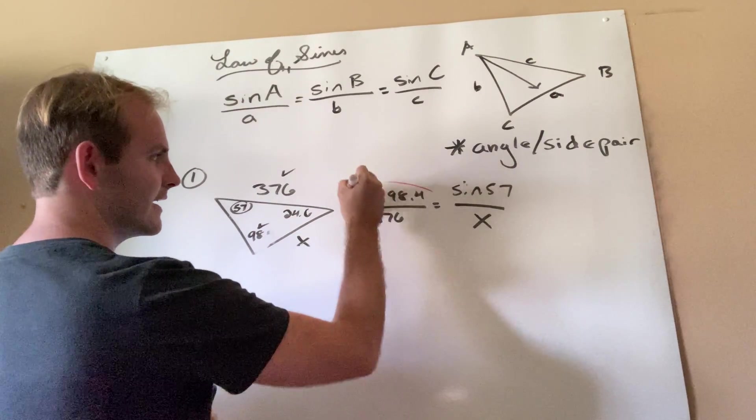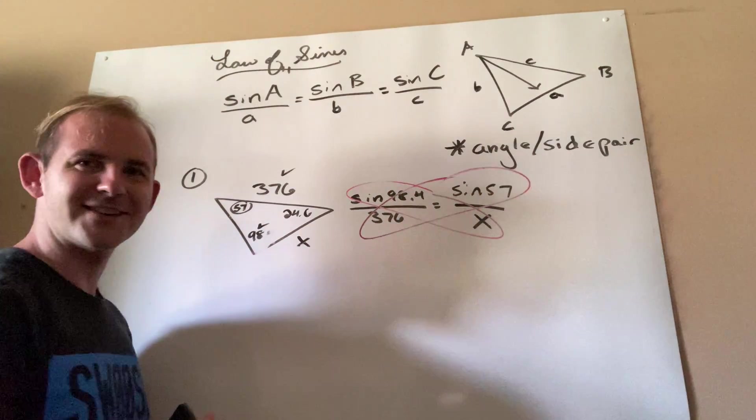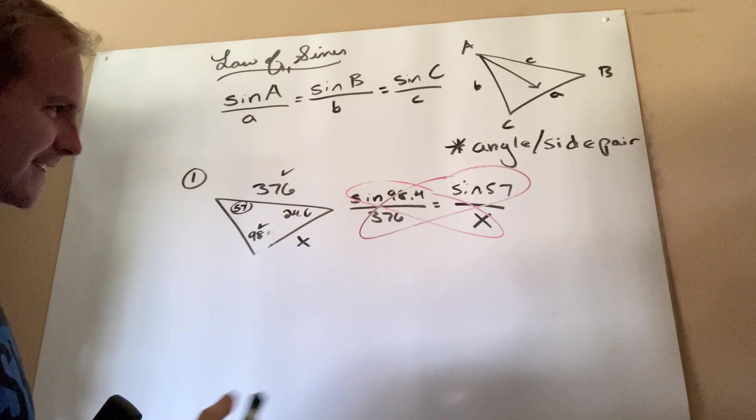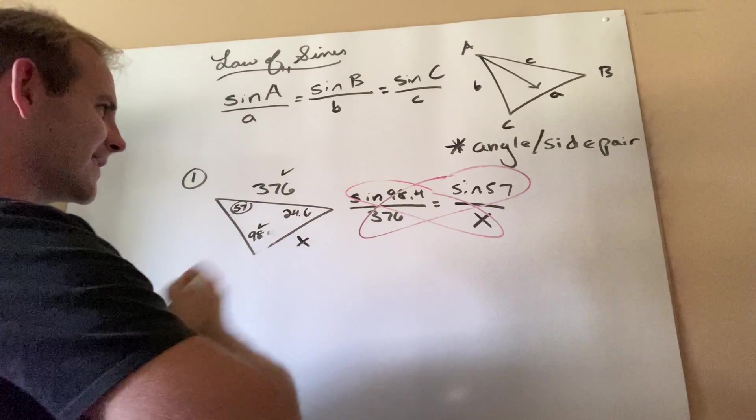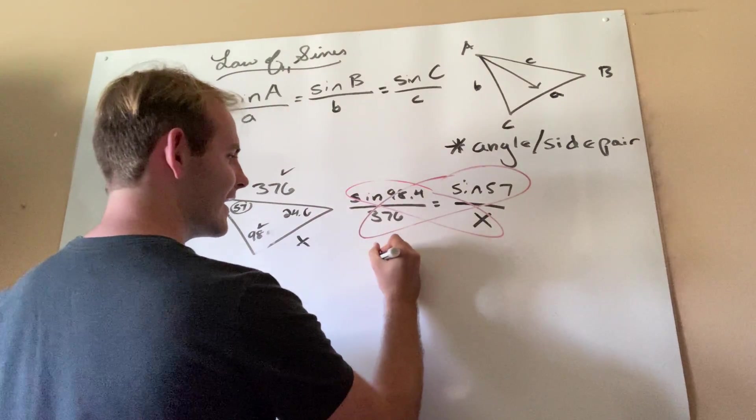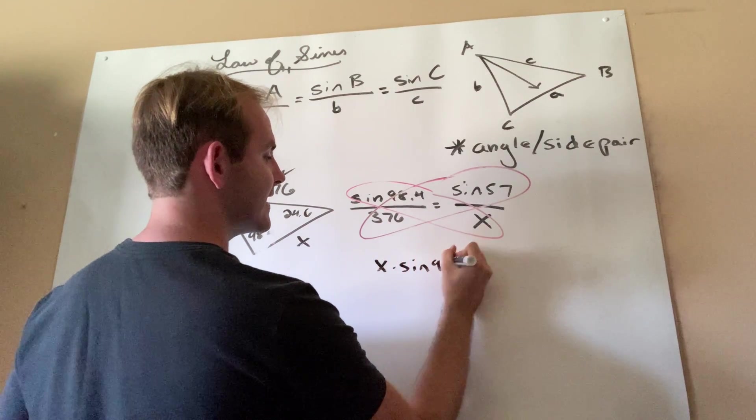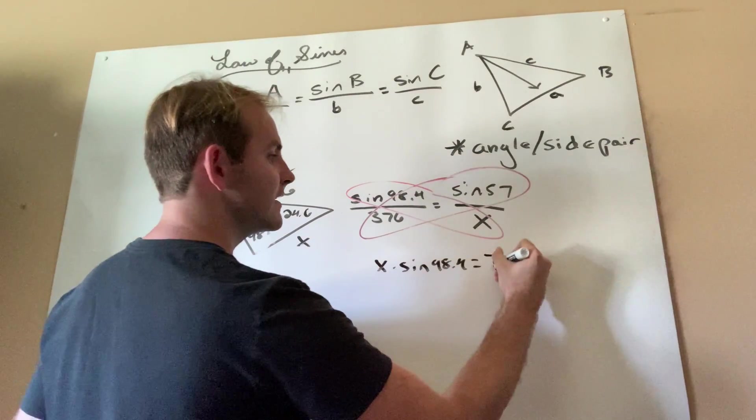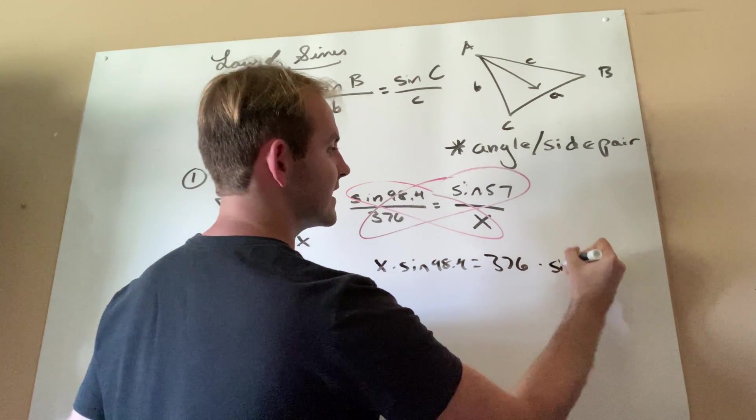Cross multiplying, you just multiply the diagonals, it's kind of like an atom for lack of a better expression. So here's what I'm going to get. I'm going to get X times sine 98.4 equals 376 times sine 57.